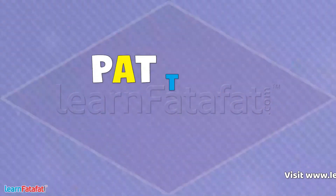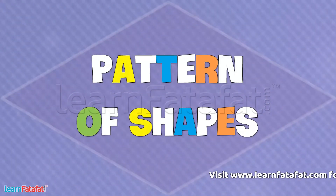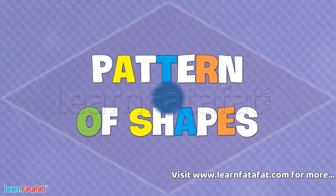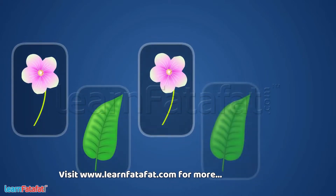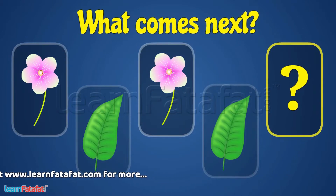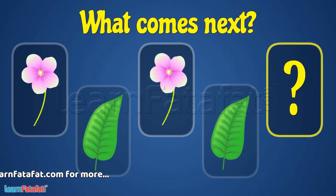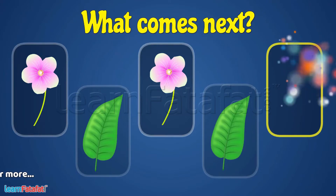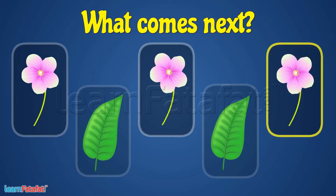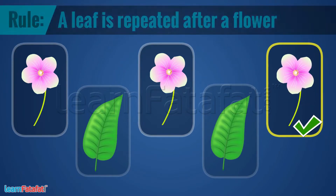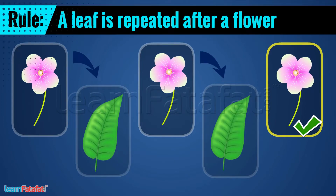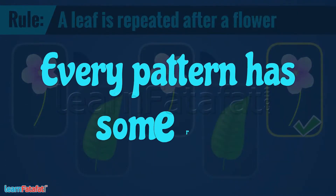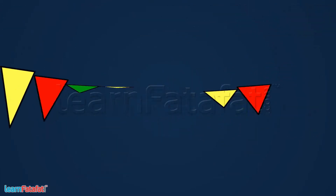Let's learn the pattern of shapes in this video. Look at the sequence. What comes next? Yes, it is a flower. How did you find it? A leaf is repeated after a flower. In the same way, every pattern has some rule.